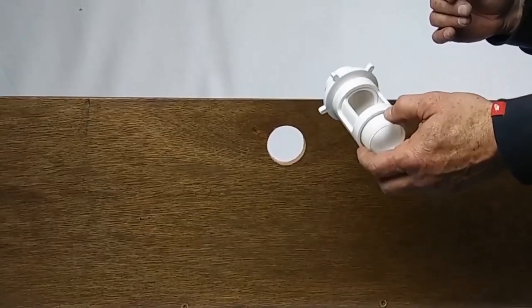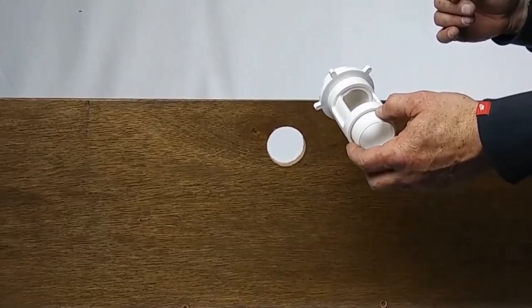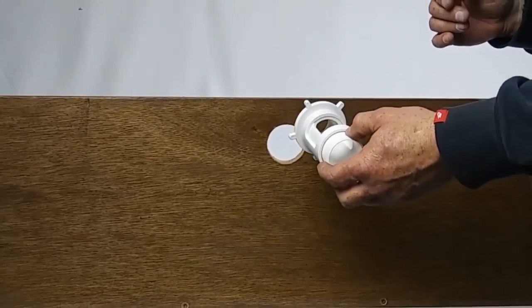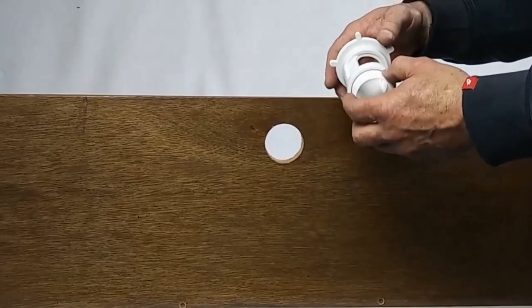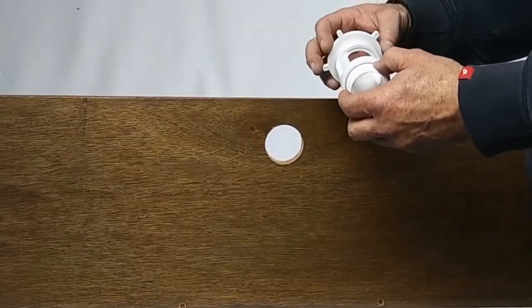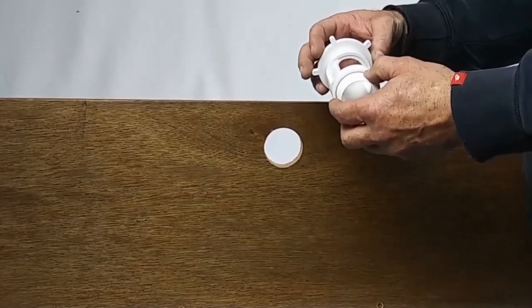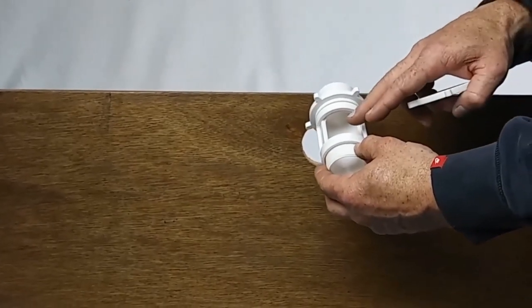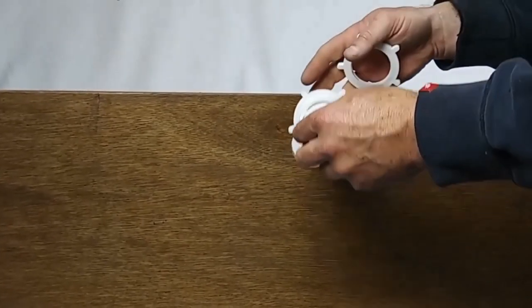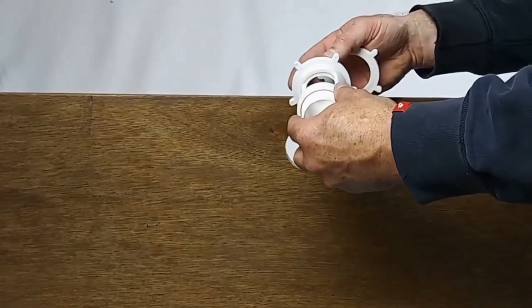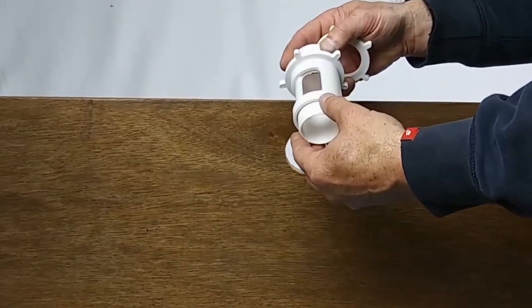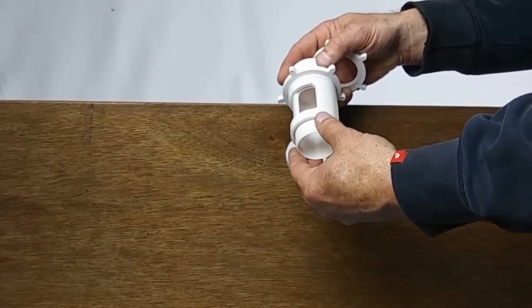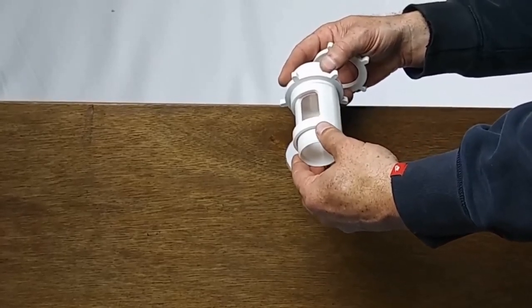Step one, we're going to attach the water inlet valve to the water inlet of the pool using the attachment ring. When we attach the inlet valve we're going to be sure that the valve opening is pointing straight up. We're going to preset the valve opening to the midway point so that the valve itself is half open and half closed.